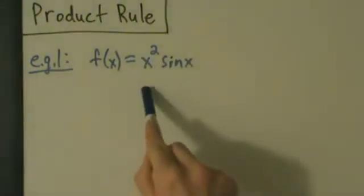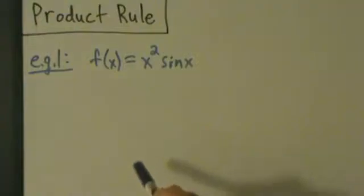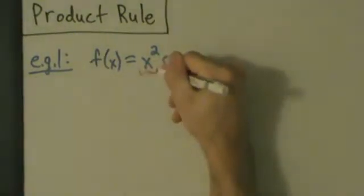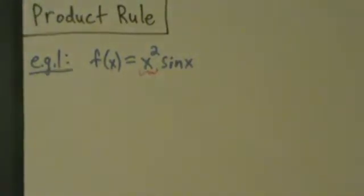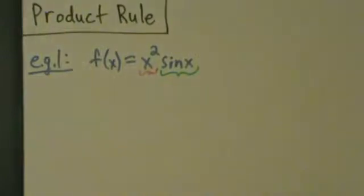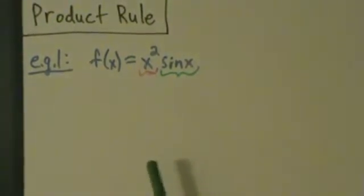So here's f of x equals x squared times sine of x, so we have a product of two functions here, so we're going to have to use the product rule. To make it a little bit easier, we can identify what's our first guy and what's our second guy. We don't want to call them little f and little g because little f is already taken — maybe we can call them little g and little h — but we don't really even need to call them anything.